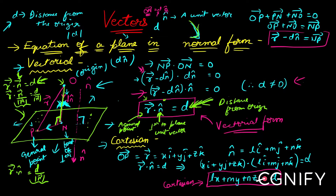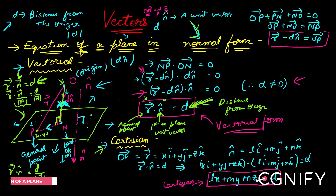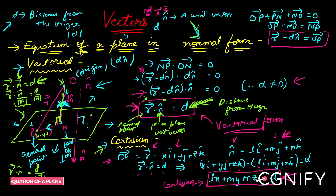This was the vector normal form. Now for the Cartesian form: take the general point P with coordinates (x, y, z), so r̄ = xi + yj + zk. Represent n̂ in component form as li + mj + nk. Substituting both into r̄ · n̂ = d and taking the dot product, you get the Cartesian form: lx + my + nz = d. This is the same equation of the plane in Cartesian form.